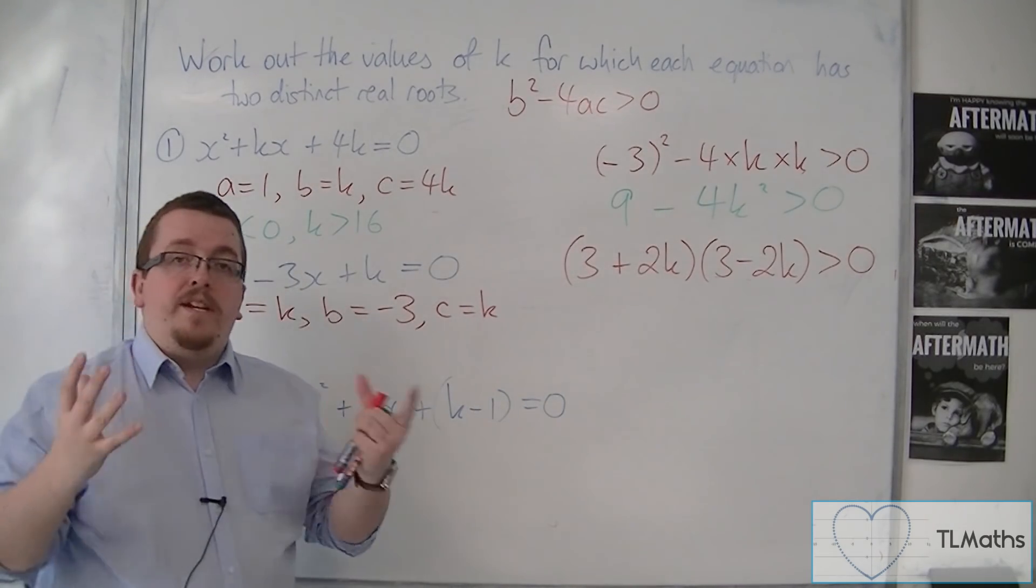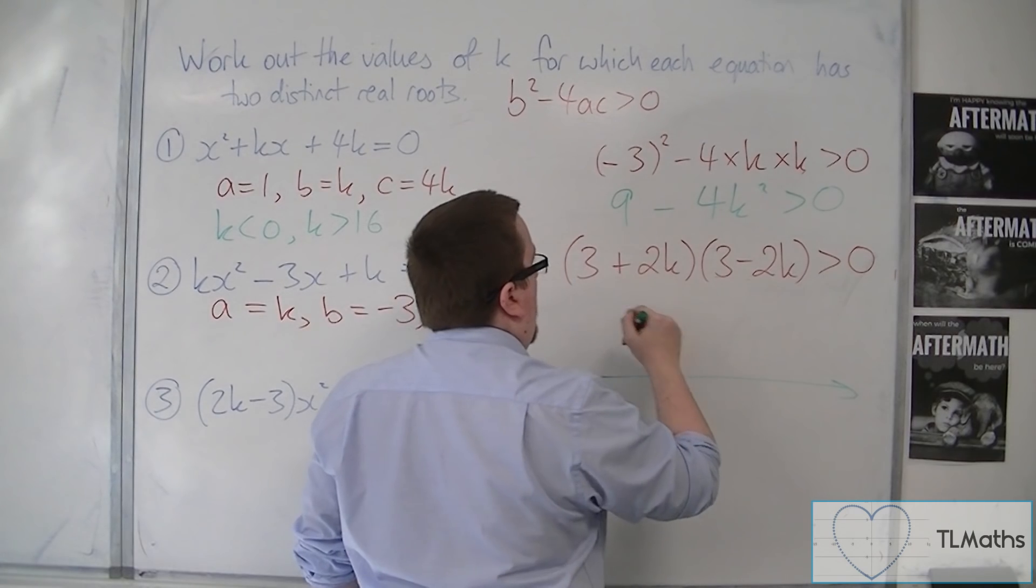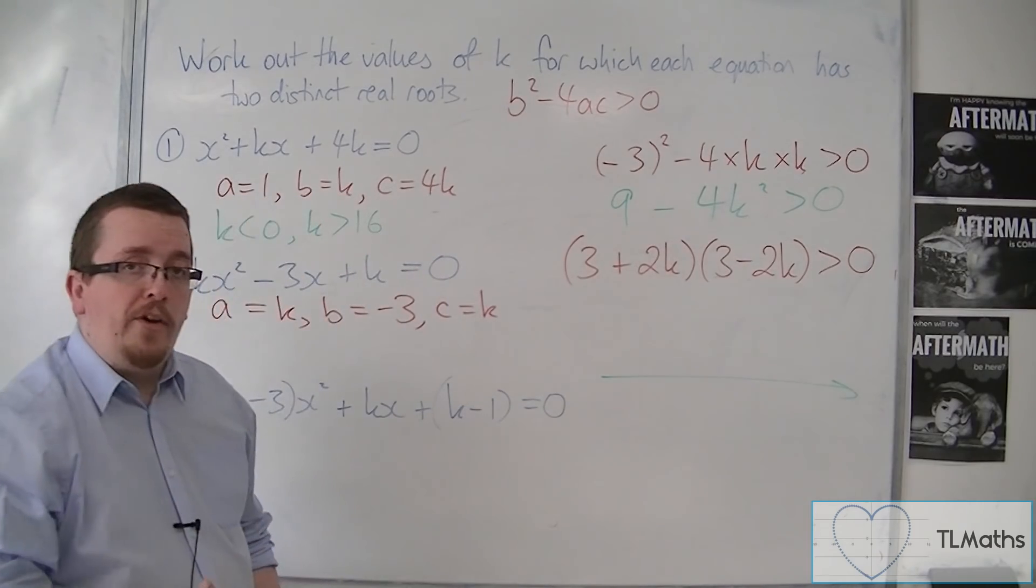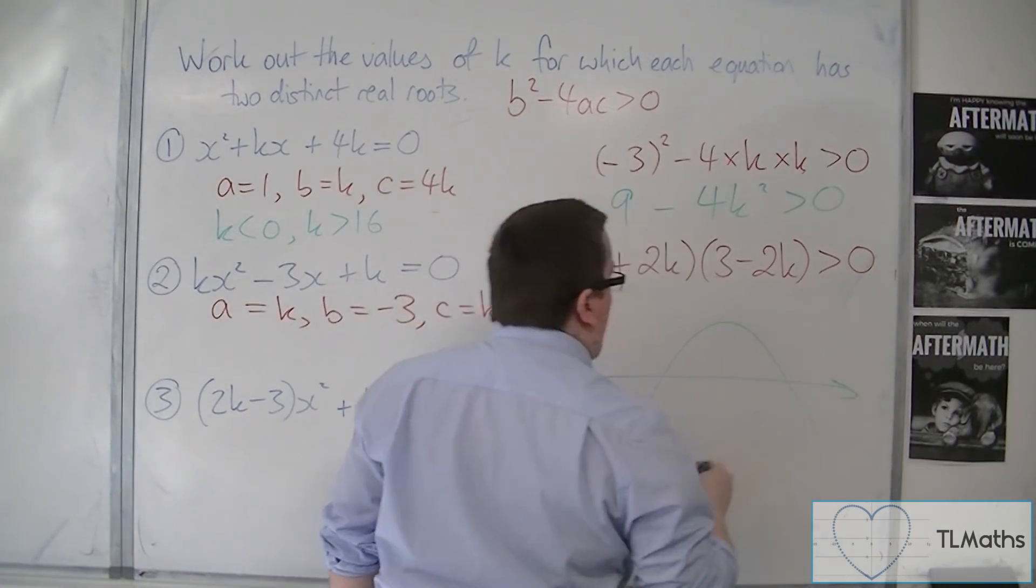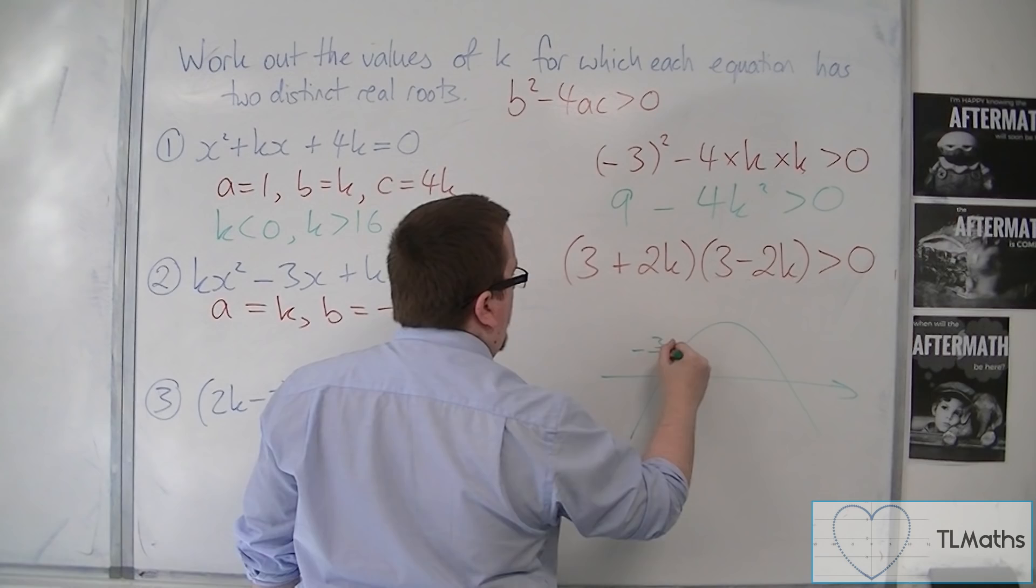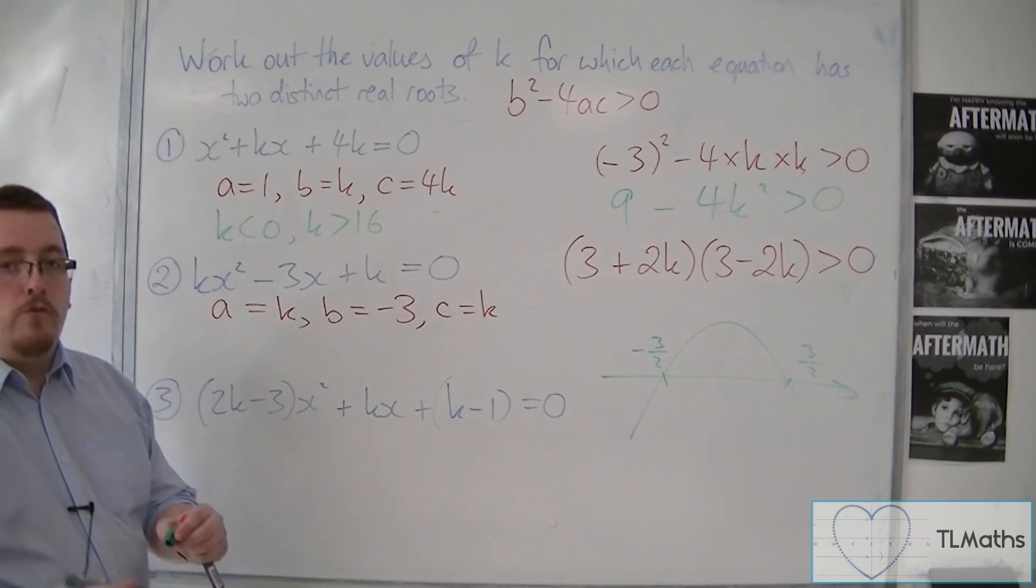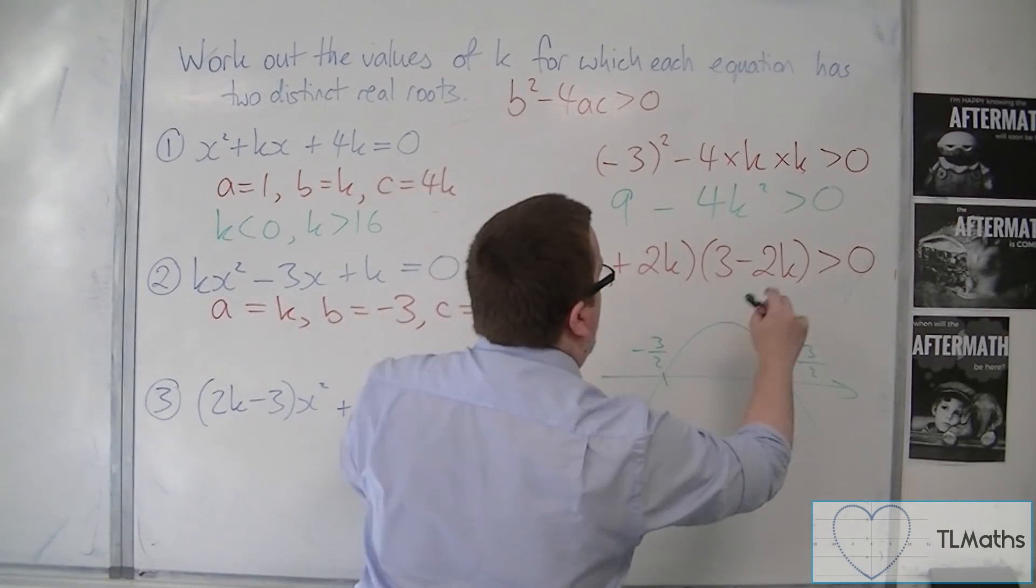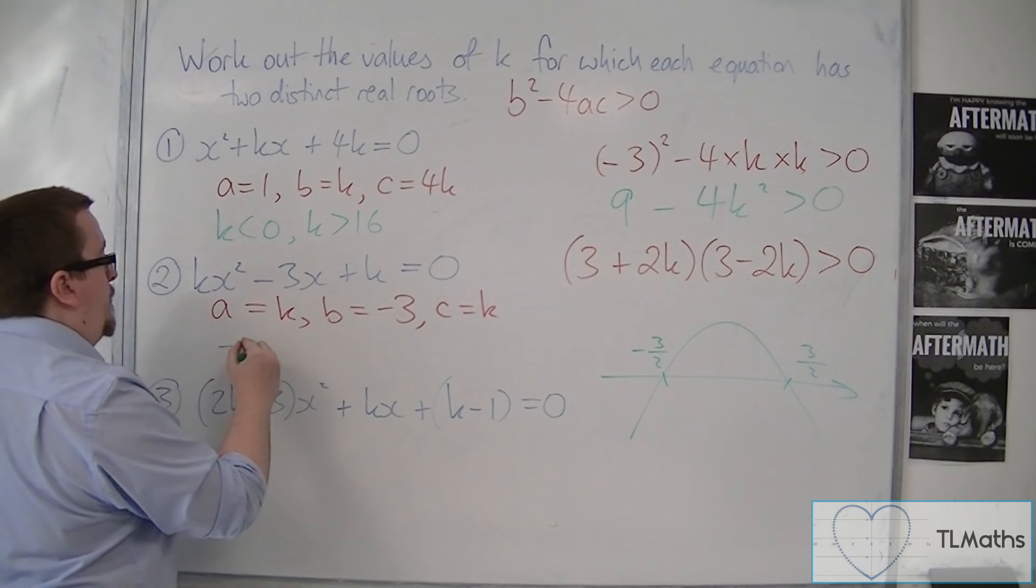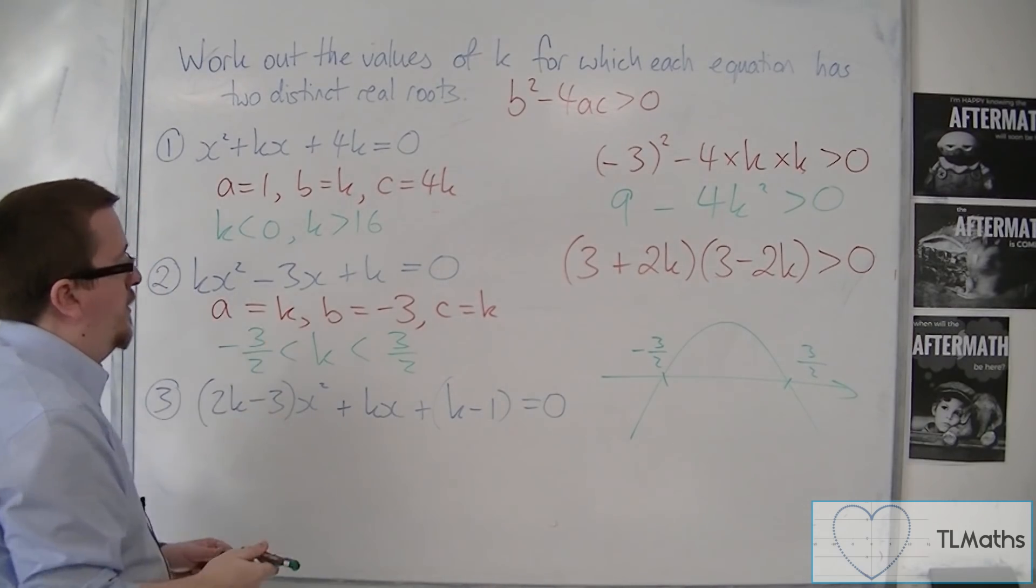So now we can sketch the quadratic that comes from this. So it's a parabola that is upside down, because we've got a minus sign in front of the k squared. So it looks like that. And it will be going through minus 3 halves and positive 3 halves. OK, the solutions to this being equal to zero. So where is the parabola above the k-axis? Well, it's above it between these two values. So it is between minus 3 halves and 3 halves. And that solves number 2.